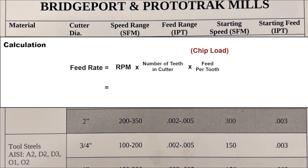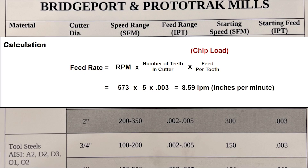We use the calculated RPM from our previous equation to work the problem. 573 times 5 — the number of teeth in the cutter — times .003 equals 8.59 feed rate in inches per minute.